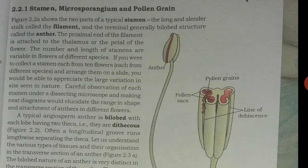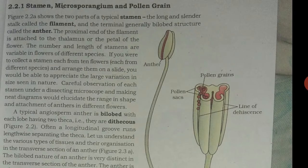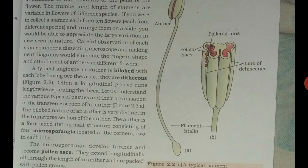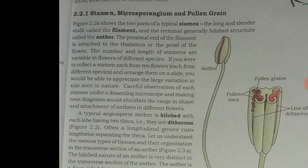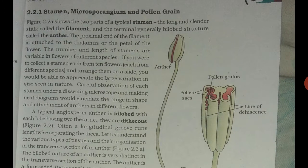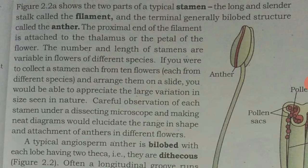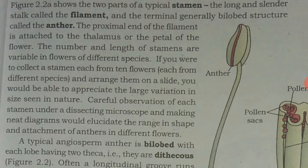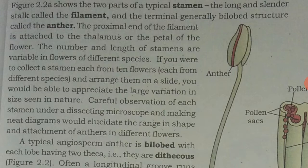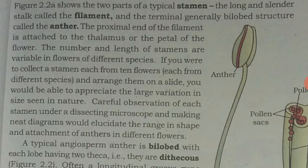Now we discuss the topic: Stamen, Microsporangia. The parts of a typical stamen — the long cylindrical stalk is called the filament, as given in Figure 2.2. The terminal, generally bilobed structure is called the anther. The proximal end of the filament is attached to the thalamus or petal of the flower. The number and length of stamens are variable in flowers of different species.